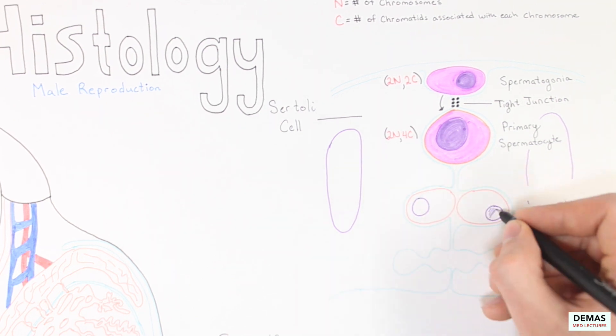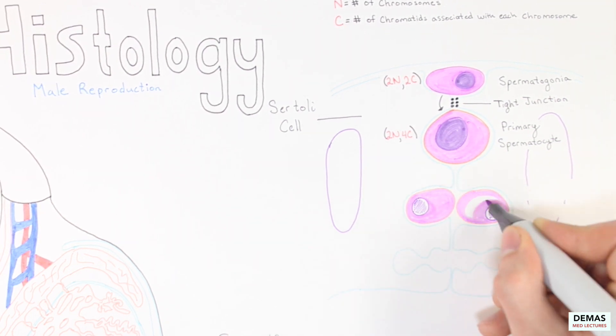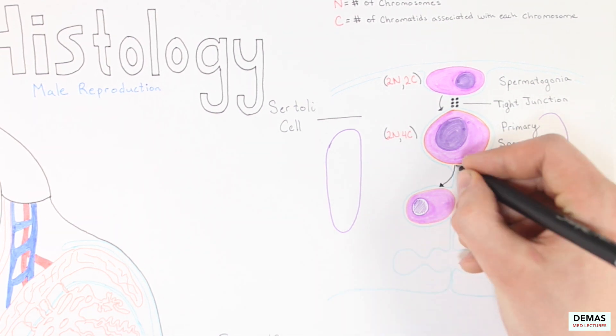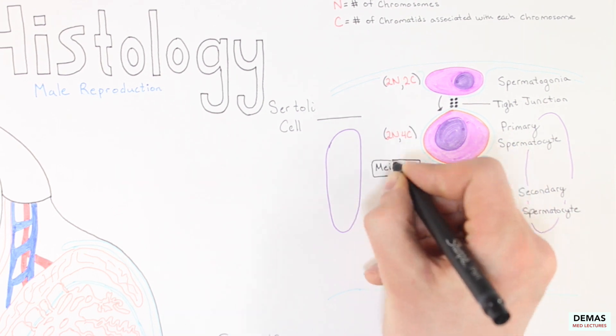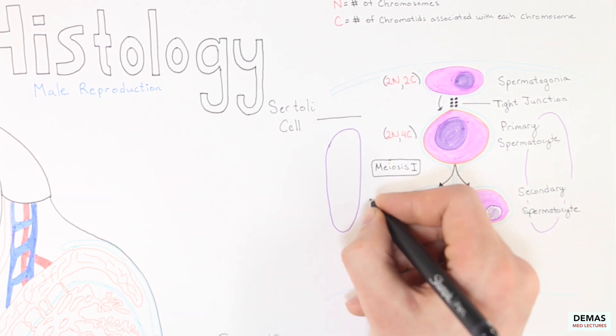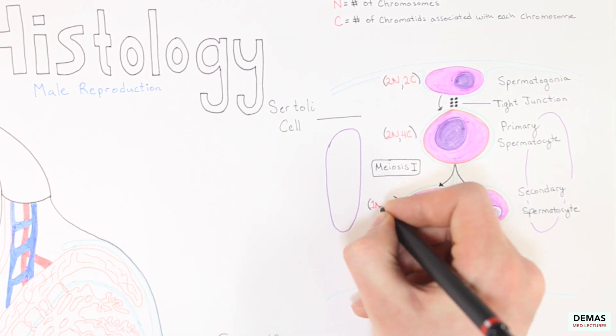During the next step of maturation, the primary spermatocytes become secondary spermatocytes. During the process, the primary spermatocytes undergo meiosis I, and the genetic information is reduced in half. Secondary spermatocytes are therefore considered 1N2C.